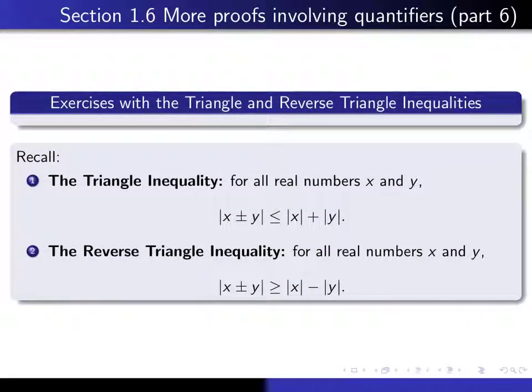So let's recall the formulas for the triangle and the reverse triangle inequalities. The triangle inequality says for any pair of real numbers x and y, the absolute value of x plus or minus y is less than or equal to the absolute value of x plus the absolute value of y. And the absolute value of x plus or minus y is bigger than or equal to the absolute value of x minus the absolute value of y.